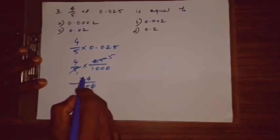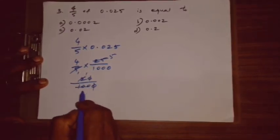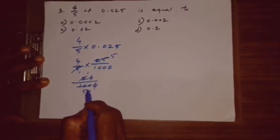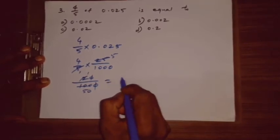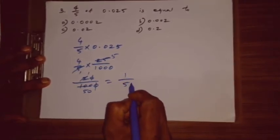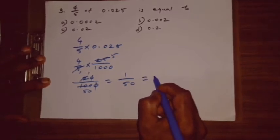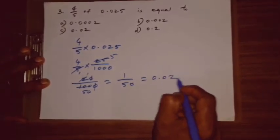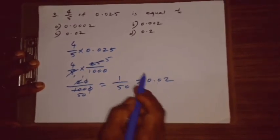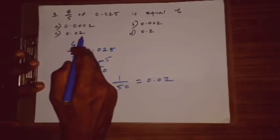So, 1 by 50. So, 1 by 50. So, how to change? 0.02. So, answer is 0.02. C. Correct answer.